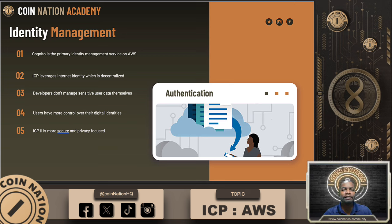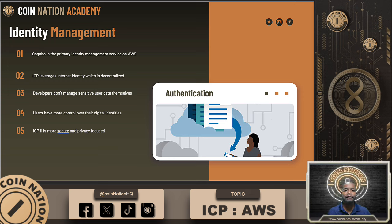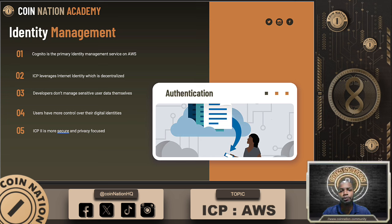Let's move on to identity management — authentication that verifies who users are and manages their access to your app's features. AWS's approach offers Cognito for handling authentication. While Cognito supports social logins and multi-factor authentication, it requires significant setup and management. You also have to trust AWS with your user data, adding another layer of centralization. On ICP, authentication is managed through Internet Identity, a decentralized service. It doesn't require users to create multiple accounts — it's secure, simple, and fully on-chain, meaning developers don't have to manage sensitive user data themselves and users have more control over their digital identities.